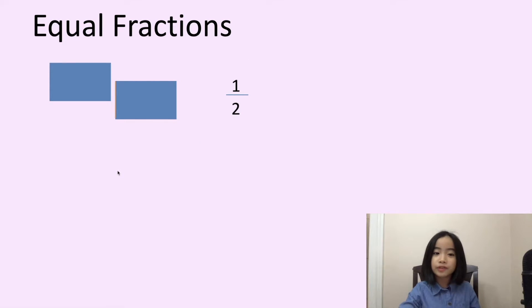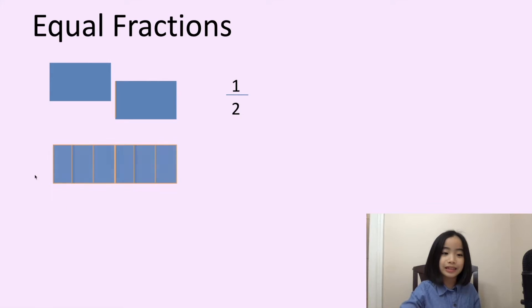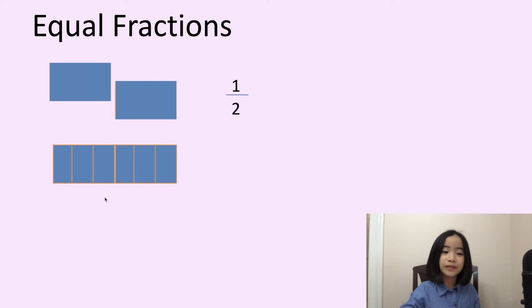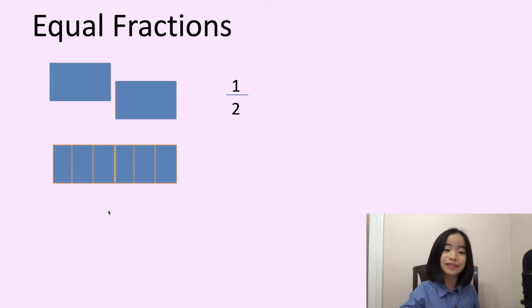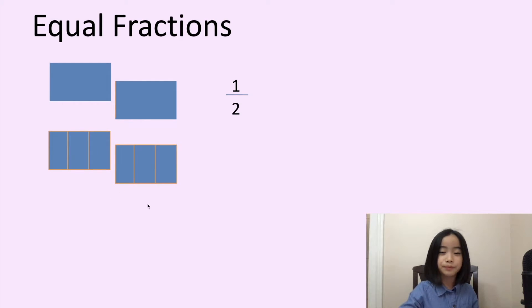Now, let's look at a few more examples. Here, I have the same rectangle, but I am going to divide it into six equal pieces. Now, I am going to take three pieces away. This is known as three-sixths.